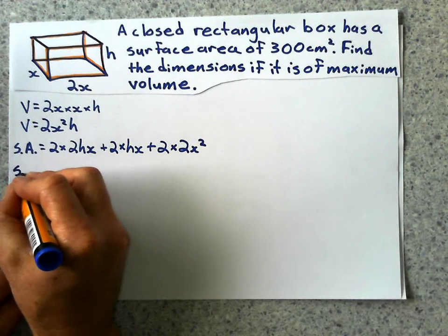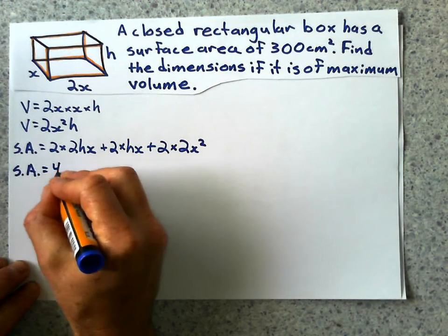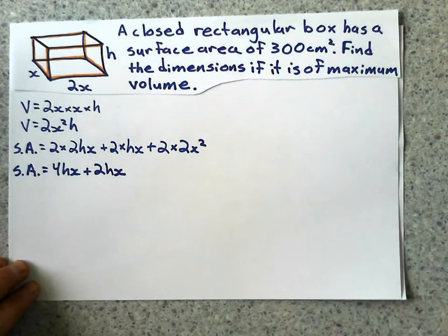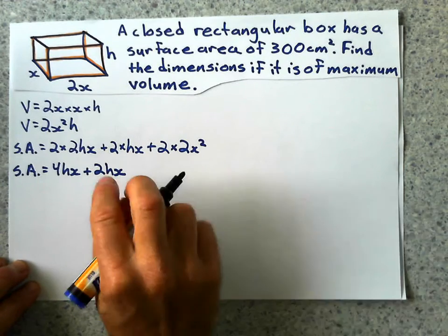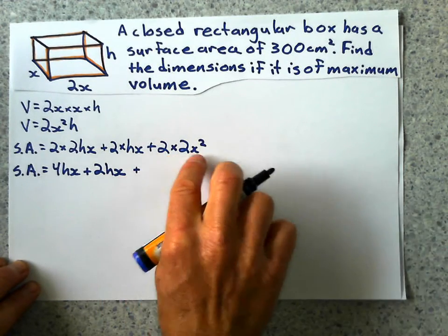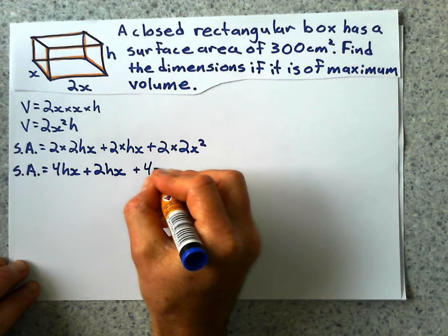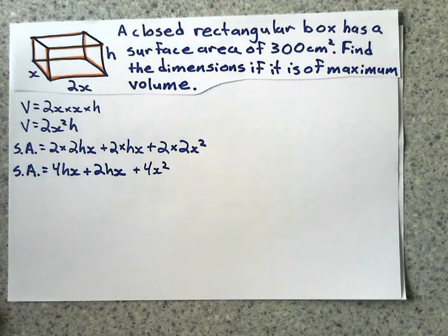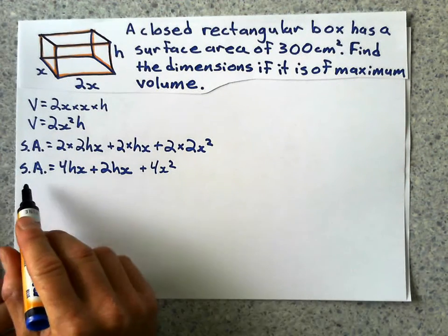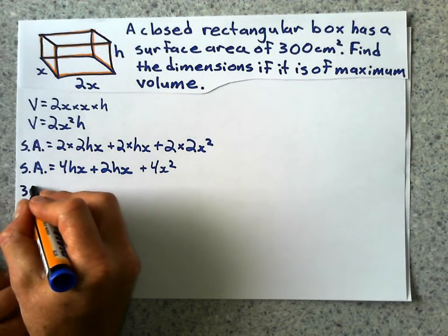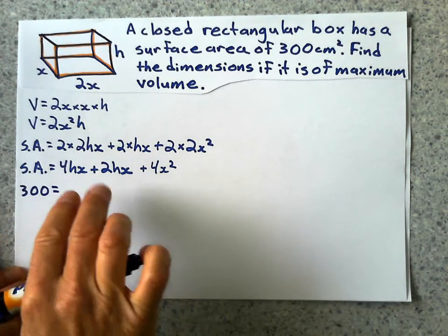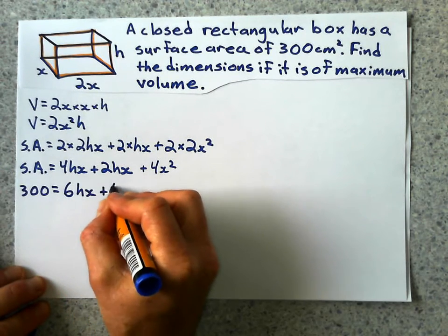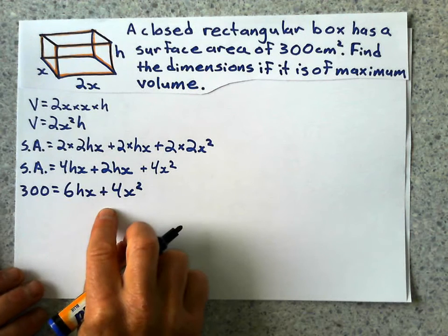Alright, so I'll simplify all that. Surface area, this gives me 4hx, this gives me 2hx, and of course it doesn't matter if you write it xh, just trying to keep it in alphabetical order, plus 4x squared. So now what? Well, now it says the surface area is 300, so the surface area is 300. And I can collect these like terms right here to get 6hx plus 4x squared.